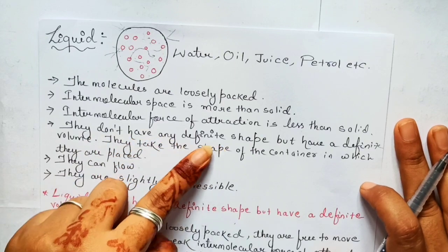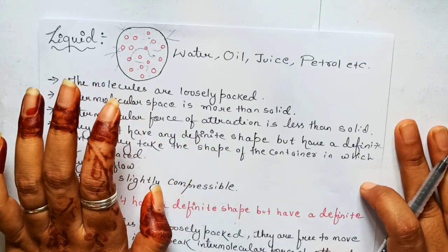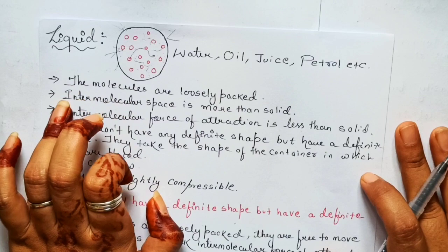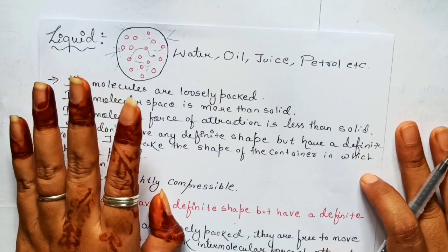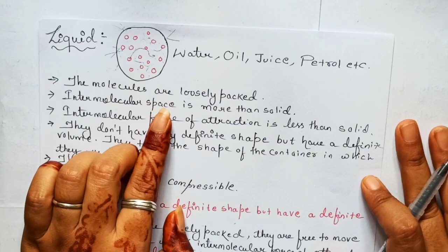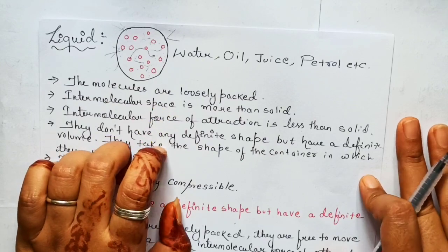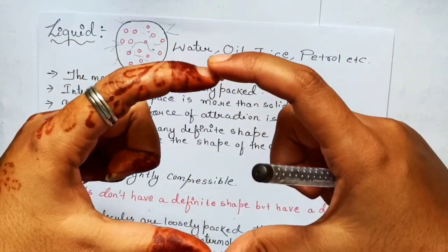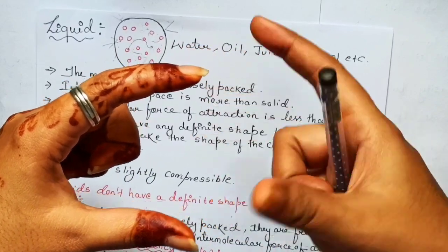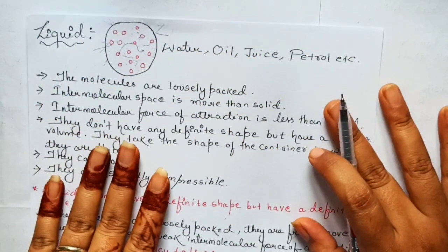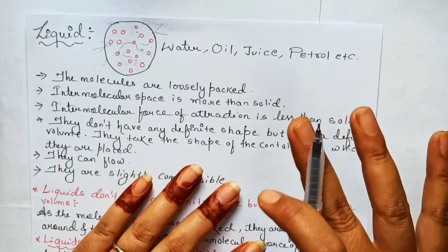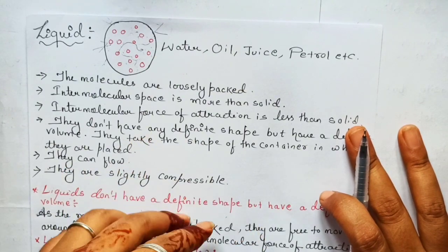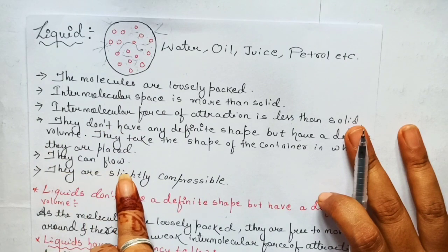Liquids don't have any definite shape — we all know that. If I ask you what is the shape of water or the shape of milk, we will not know, because they are liquid and they don't have any definite shape. But they do have a definite volume. If I fill a liquid in any container — say a bottle — the liquid occupies the volume of that bottle. So liquids don't have any definite shape but they have a definite volume.